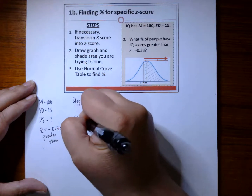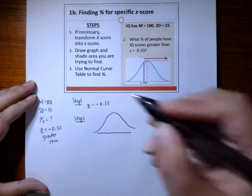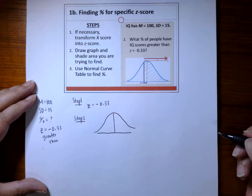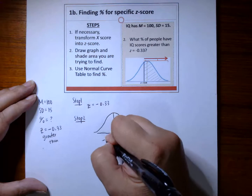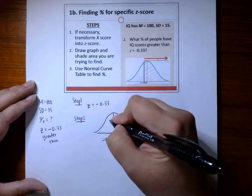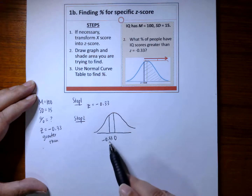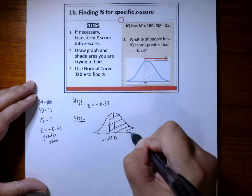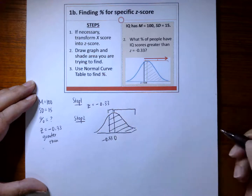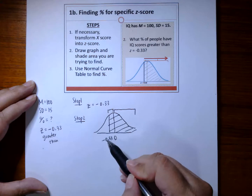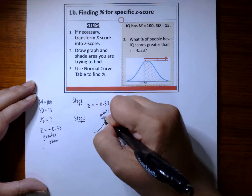Step 2: we need to graph and shade the area that we're looking for. In a symmetrical distribution, the mean is always in the middle, and the mean for a z-score is 0. A z-score of negative 0.33 falls below the mean. The question is asking for everything greater than negative 0.33 — in other words, this whole shaded area. We can break this into two large areas: from z to the mean, which is the mean-to-z column.